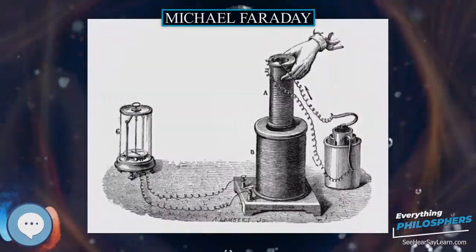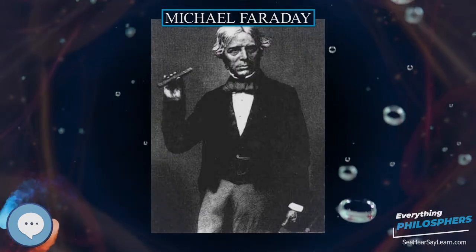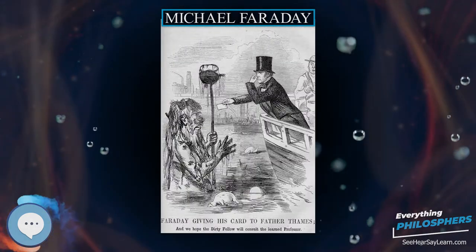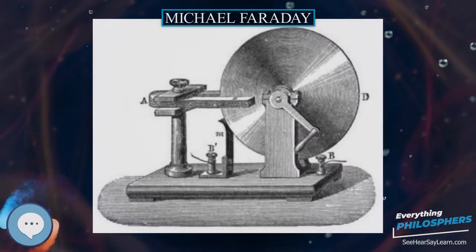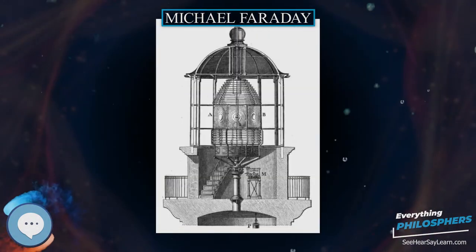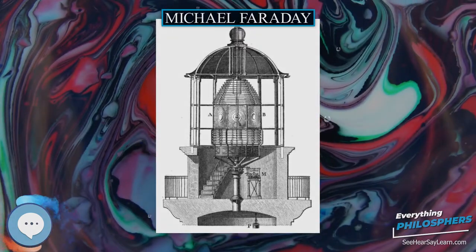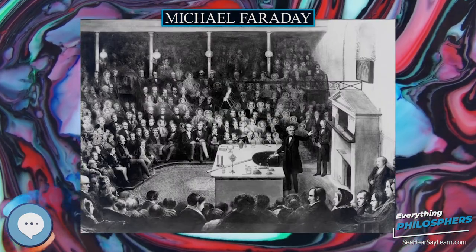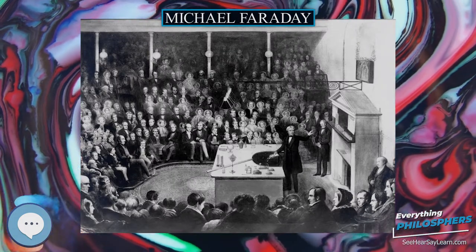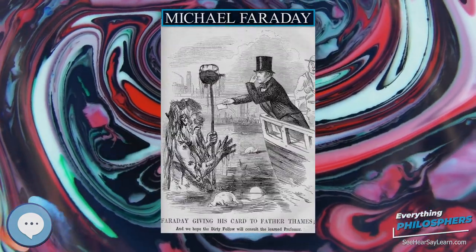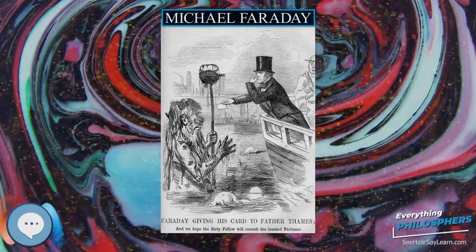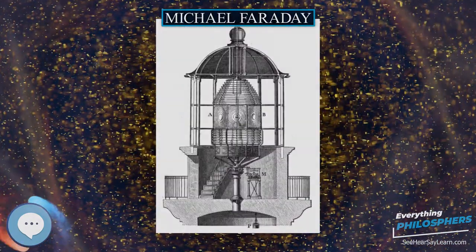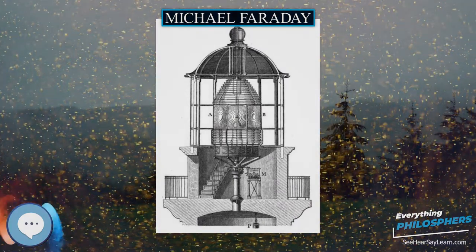Faraday was an excellent experimentalist who conveyed his ideas in clear and simple language; his mathematical abilities, however, did not extend as far as trigonometry and were limited to the simplest algebra. James Clerk Maxwell took the work of Faraday and others and summarized it in a set of equations accepted as the basis of all modern theories of electromagnetic phenomena. On Faraday's uses of lines of force, Maxwell wrote that they show Faraday to have been in reality a mathematician of a very high order. The SI unit of capacitance is named in his honor — the Farad. Albert Einstein kept a picture of Faraday on his study wall, alongside pictures of Isaac Newton and James Clerk Maxwell.